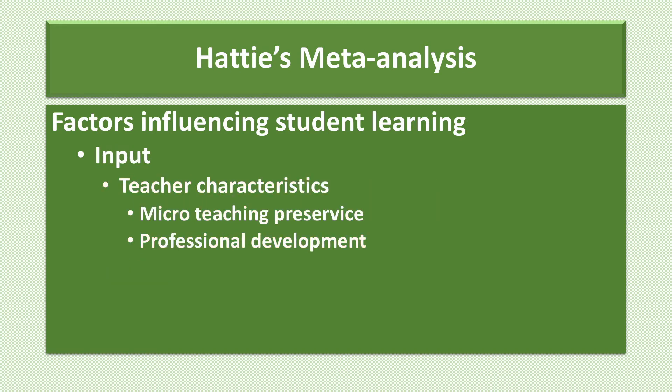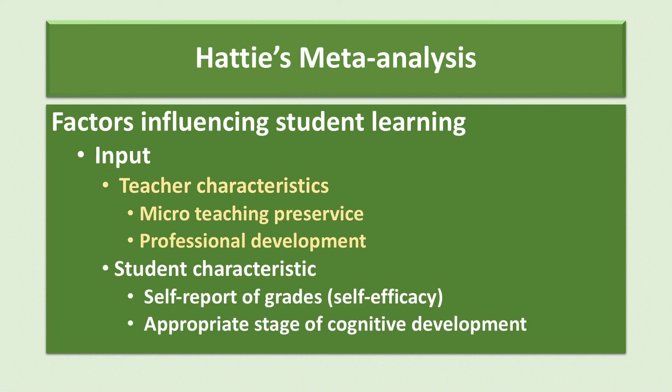For input factors, Hattie found that teachers who had been provided micro-teaching experiences in their pre-service programs or had engaged in professional development activities had a better-than-average impact on student achievement. As for student characteristics, Hattie found that students' reports of the grades they received the previous year and whether or not they were at the appropriate stage of cognitive development for their age were the most important factors. In fact, these two were better predictors of student achievement than were measures of the learner's cognitive abilities as measured on an intelligence test.